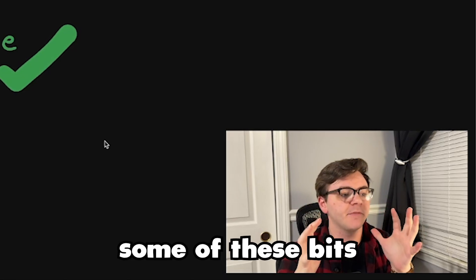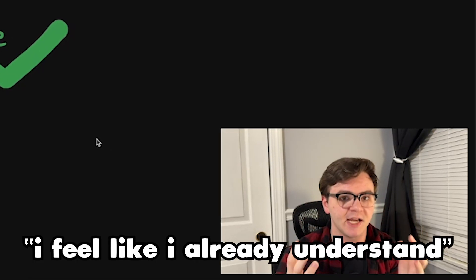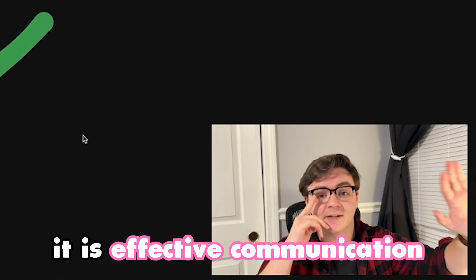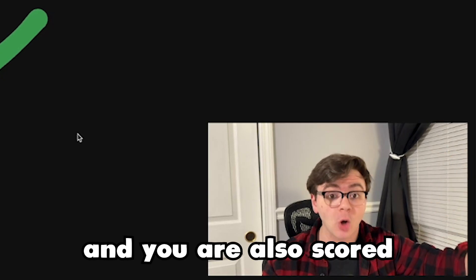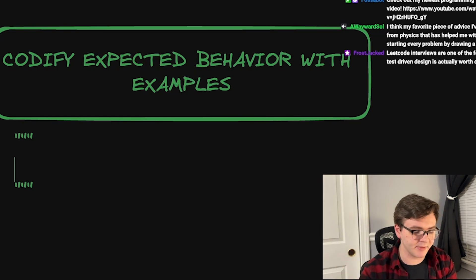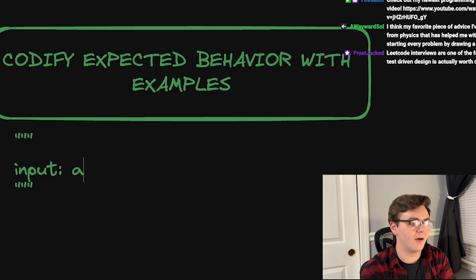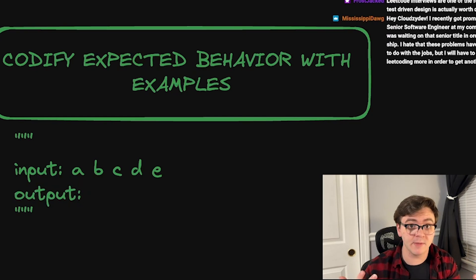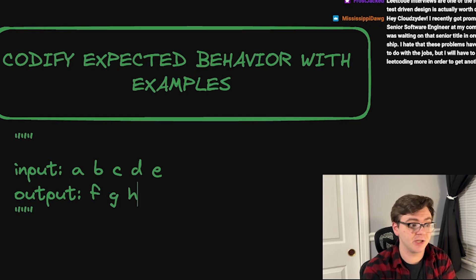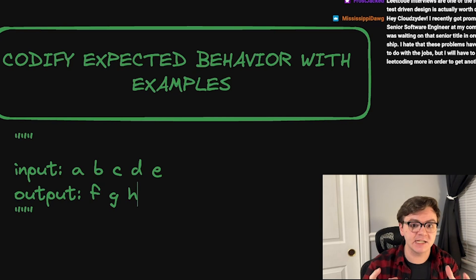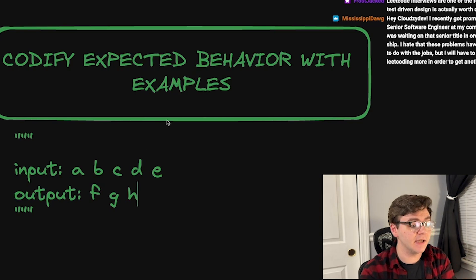In your head, some of these bits might seem pedantic. You might think, well, I feel like I already understand the problem, I've already seen the problem. Doesn't matter — do this anyway. It is effective communication, and you are also scored separately on communication. You've given me some arbitrary problem — let's say I have input of A, B, C, D, E. I'm expecting, based on what you've told me, that I'm going to get as output F, G, H. Is that correct? Ask them: is that the expected output? They give you their checkmark of approval.